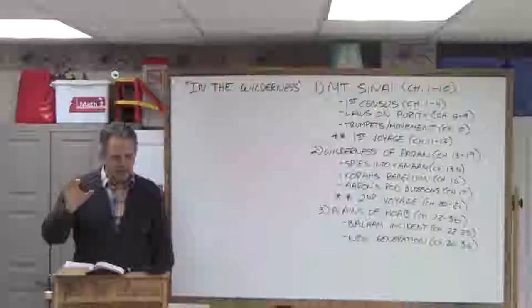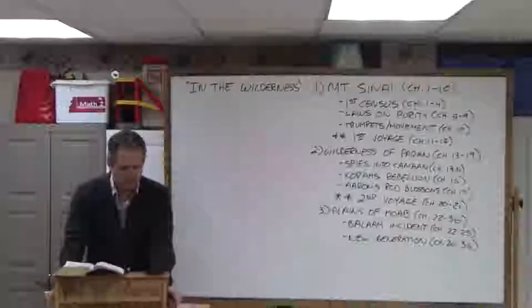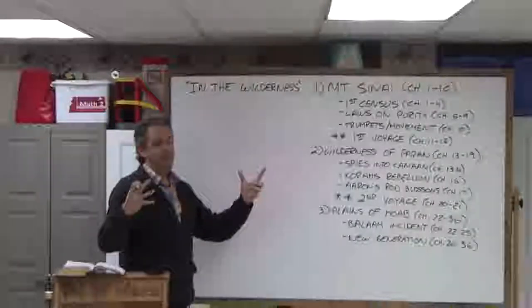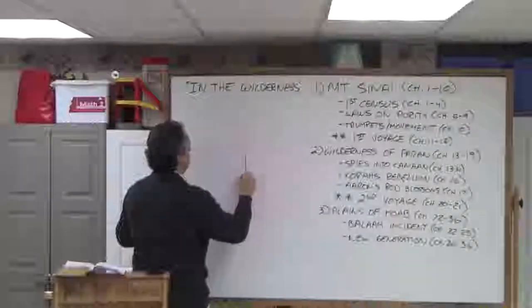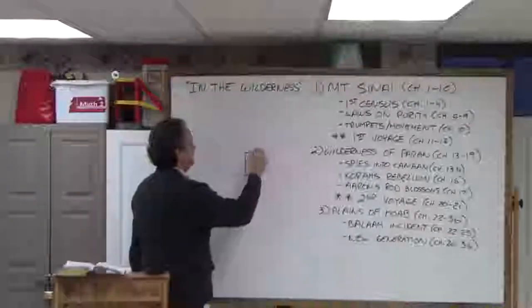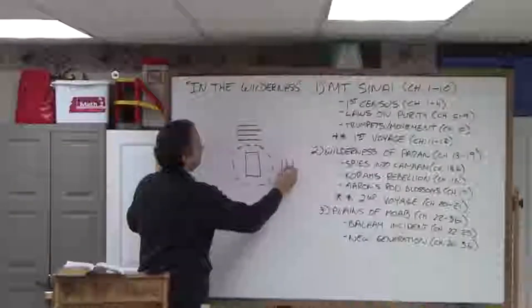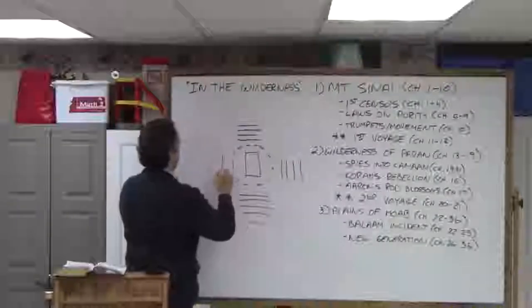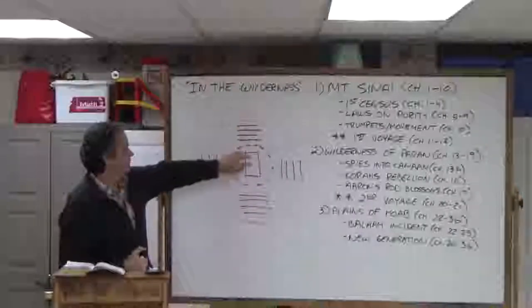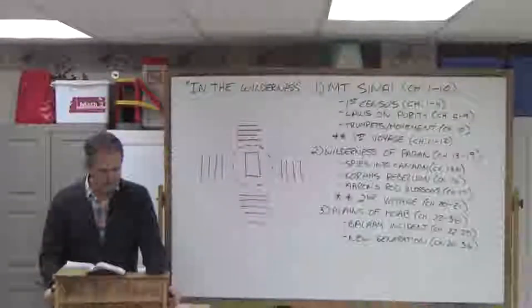This is a military census. They only count the men 20 years old and older. So when we see 600,000, really it's 600,000 fighting men plus women and children. The other thing that's very interesting is the organization of this two million person camp. We've built a tabernacle. So the tabernacle is going to be right here in the middle. And what's fascinating is he has the Levites camping all the way around the tabernacle.